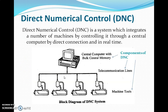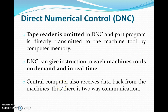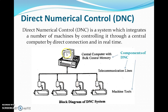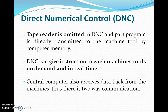It doesn't mean that once operations are started they cannot be stopped. Everything happens in real time — orders and production processes can be changed on any machine at any time and on demand. The central computer also receives data back from the machines, so there is two-way communication. The computer will know which machine is doing what operation, and when an operation finishes the machine communicates back to the central computer.